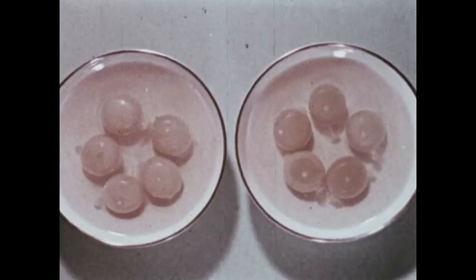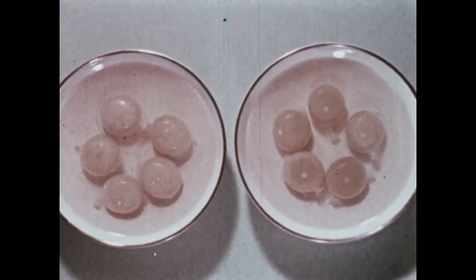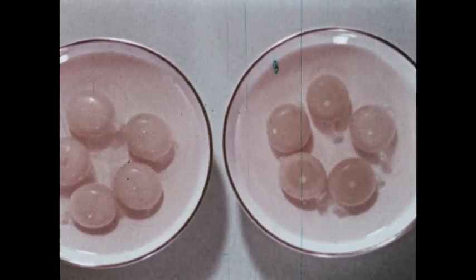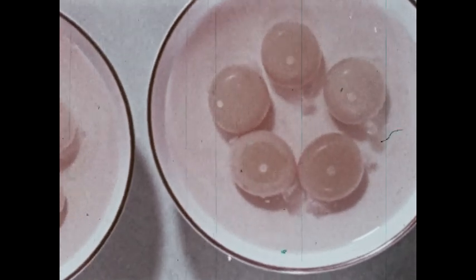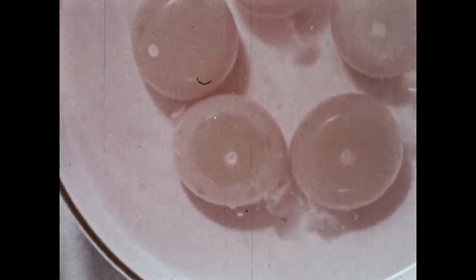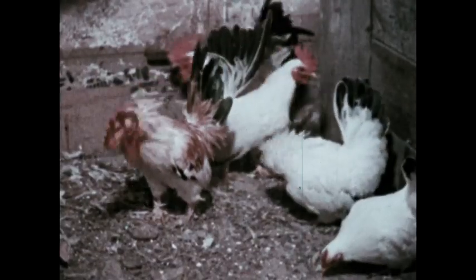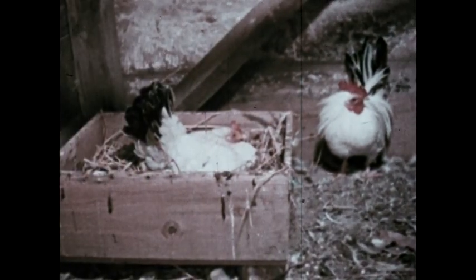But eggs like the ones on the left cannot become chickens. Eggs like the ones on the right can grow into chickens. The difference is that these have a tiny white dot on one side of the yolk. And that means they've been fertilized by a rooster, a male. Hens are females that can lay eggs. A rooster and a hen can mate to produce fertile eggs.